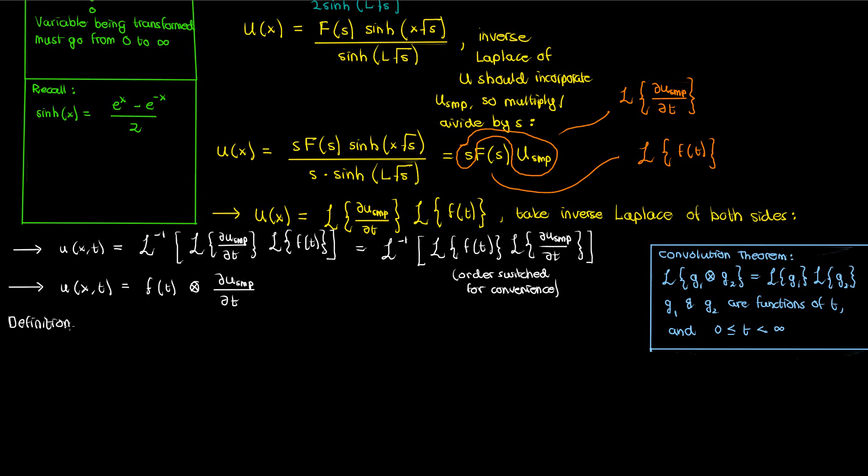And by the definition of convolution we can write the convolution of F and this partial derivative with respect to T as the following integral. Now in my convolution video you may recall that I use negative infinity and infinity as the limits of the integral. But when your variable T is only valid from zero to infinity, you're actually just allowed to ignore the negative half and write the convolution integral like this. So just in case you feel there's an inconsistency, this is the explanation.